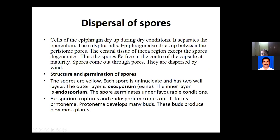All the peristomal teeth dry up, exposing the theca region to the surrounding environment. Then the central region of the theca - that is the spores - are exposed by complete disintegration of all the tissue of the theca: trabeculae disintegrate, hypodermal tissue disintegrates, and the spore sac wall disintegrates. Only the spores remain in the center of the capsule. The spores dry up and come out through the pores, dispersed into the air.